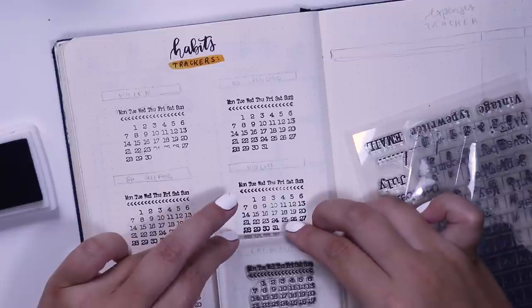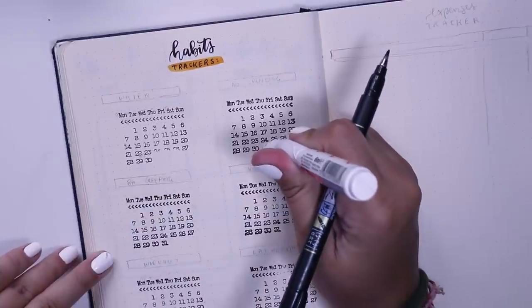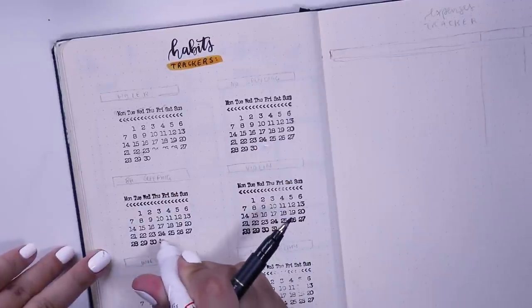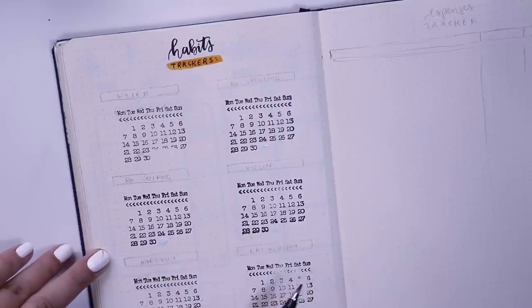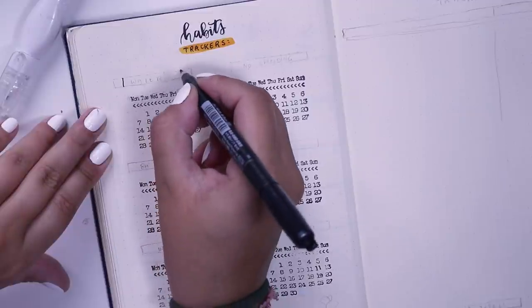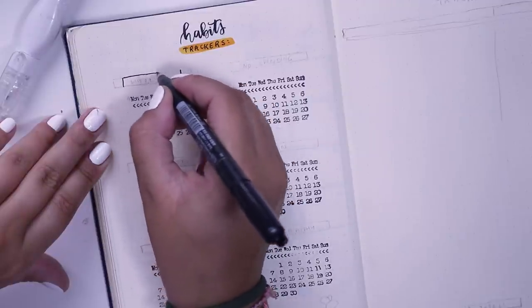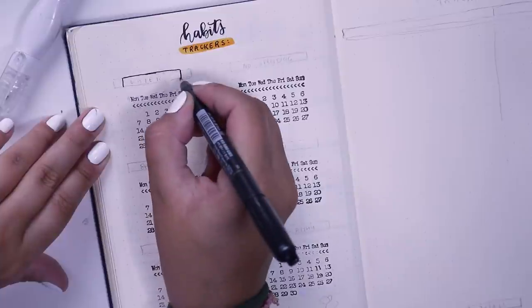But in the future, I will probably just use a pair of scissors to chop off the 31st day. And then if I ever need it, I can just stick it on to the acrylic stamp holder if and when I need it.